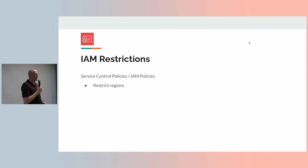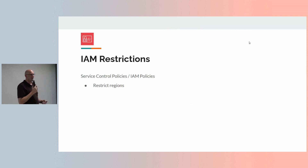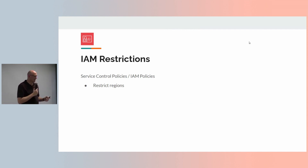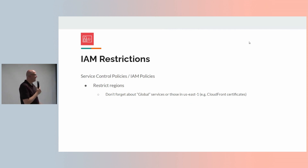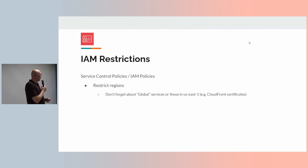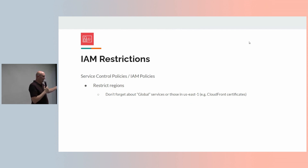This is handy because most companies operate out of one to three regions. Note: don't forget about US East 1, because certain global services actually live in that region. For example, all CloudFront certificates have to be deployed in US East 1 — even though your CloudFront distribution might be elsewhere, the certificate has to be in US East 1. So there are caveats to region restriction. You can Google this online or I have a policy — see me later if you want a copy.